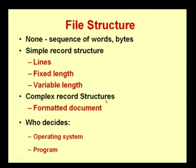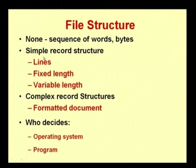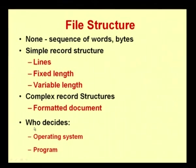The next type is a complex record structure, which involves a formatted document. Based on requirements and customer preferences, the output is formatted accordingly. For example, in a bank passbook printout, the date is printed at the left corner, followed by a description, withdrawals, deposits, and the current balance. This specific formatting is called a complex record structure.